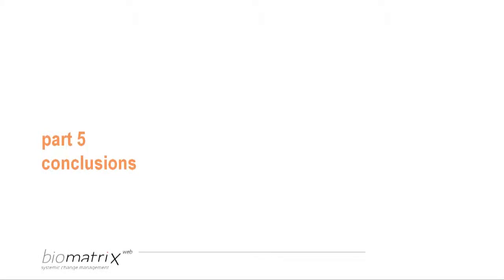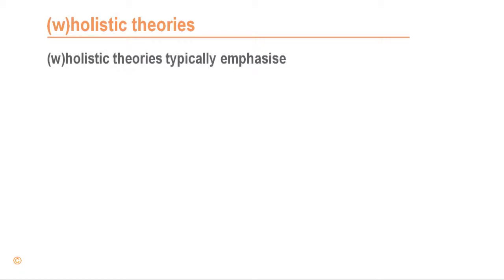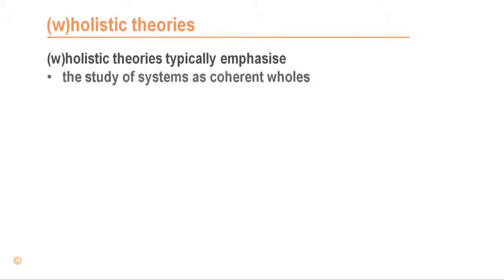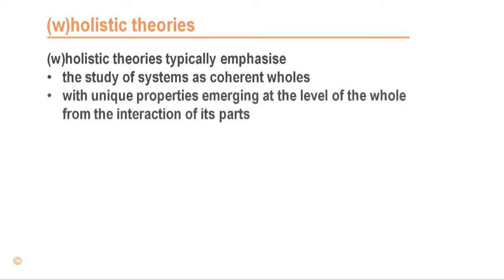Part 5 presents a series of conclusions. The first conclusion concerns holistic theories. These theories typically emphasize the study of systems as coherent wholes, with unique properties emerging at the level of the whole from the interaction of its parts.